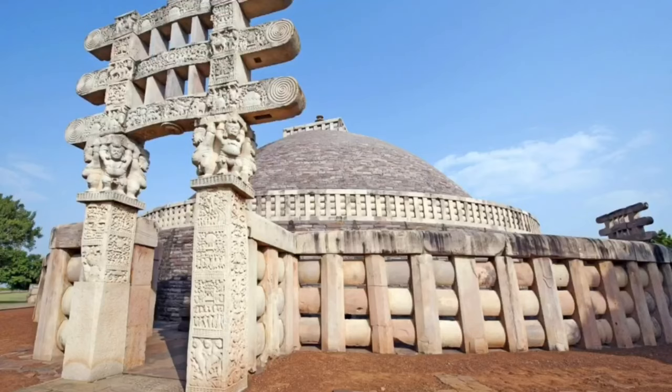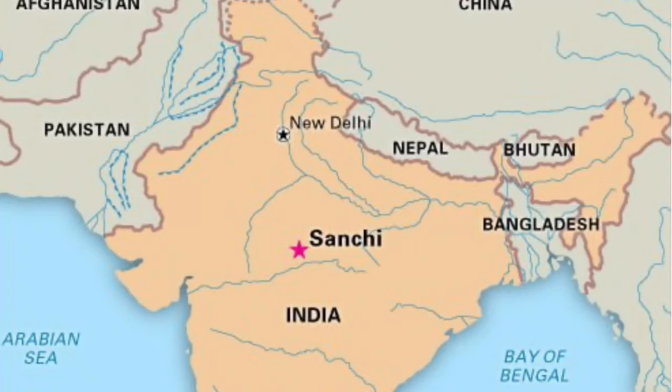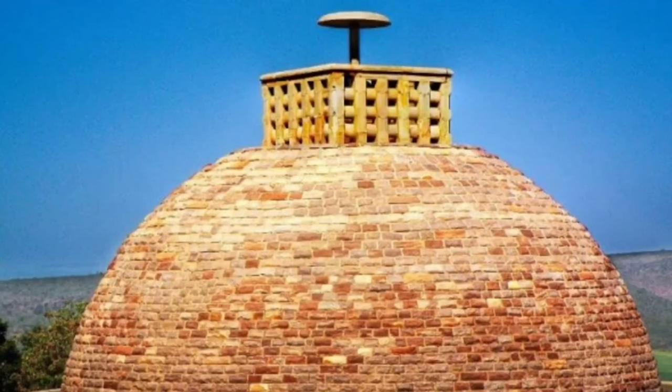The first stupa we will be discussing today is the Great Stupa of Sanchi. It is one of the oldest stone structures in India and an important monument of Indian architecture. This stupa is located at Sanchi, India — 68 kilometers north of Bhopal Pradesh. It is unique for offering visitors a chance to see the development of Buddhist art and architecture over a period of about 1,500 years.